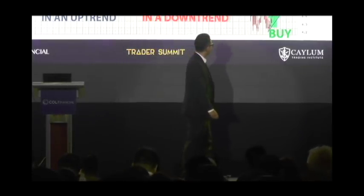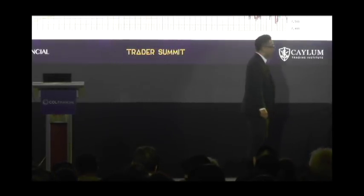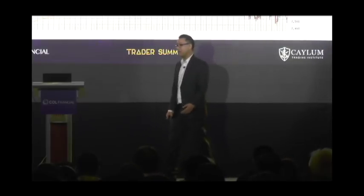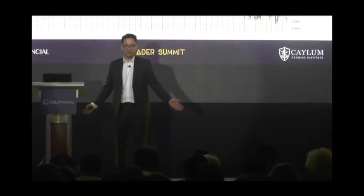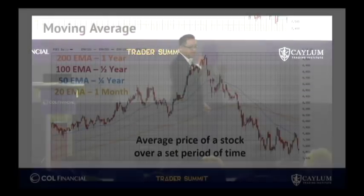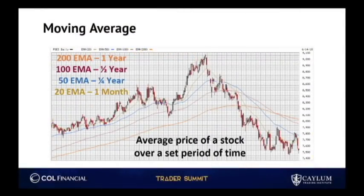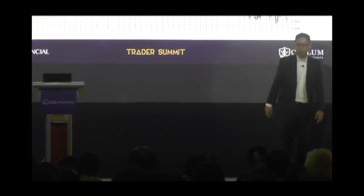This is what I'm going to add — this is the most simple thing in all of technical analysis. These multicolored lines — yellow, blue, maroon, and orange. You see those four lines? These four lines are moving averages. The key word in moving averages is average. If you knew the market's average price of a stock, do you have an edge?